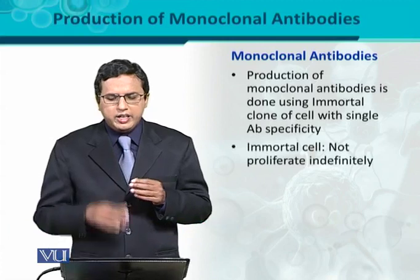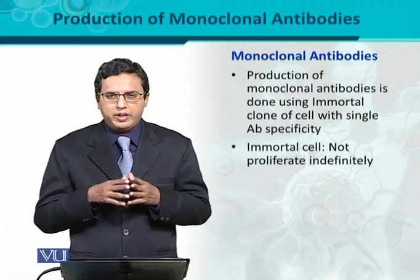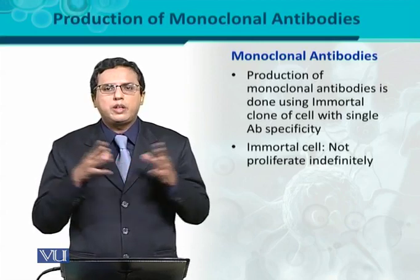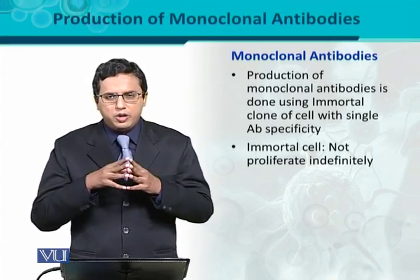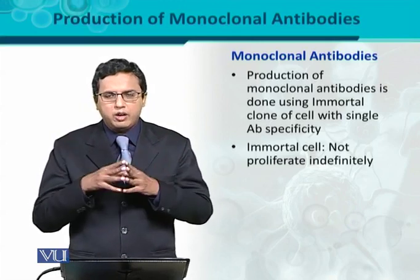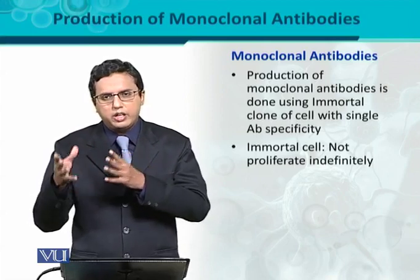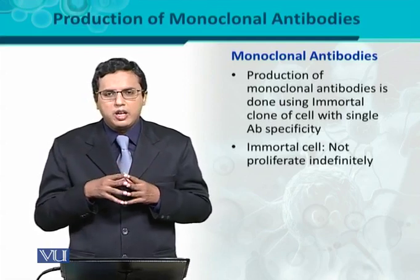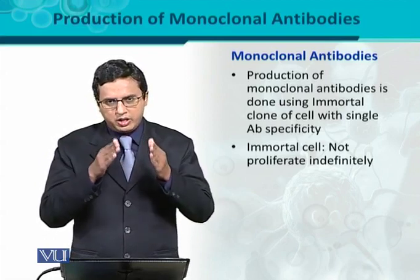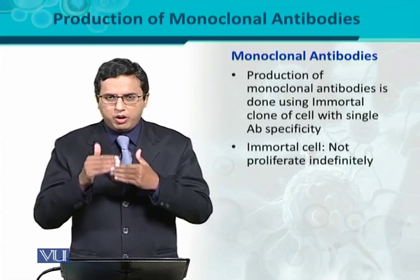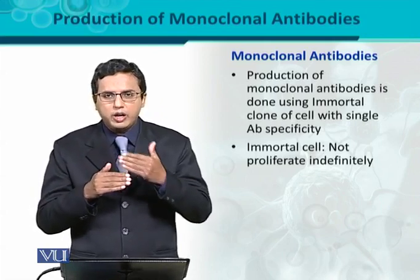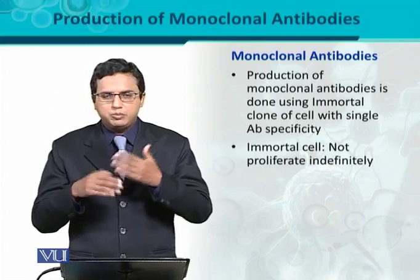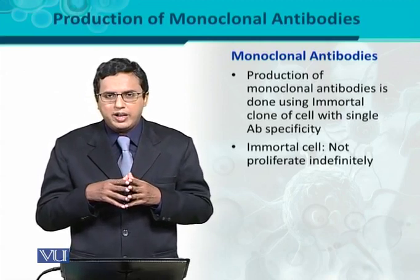Immortal se kya murad hai? Immortal means that it can proliferate indefinitely. Normally inside our body most of the cells are mortal in nature — unki jo age hai, that is specified. Ek khas time ke baad wo cell going to die, us ki jo programming hai, us ke andar jo genome hai, us mein wo cell is going to die using apoptosis or programmed cell death. Those cells are called mortal cells. In contrast, immortal cells ki andar jo proliferative ability hai wo longer aur indefinite hai — it can proliferate up to indefinite times, that's why it is called an immortal clone.